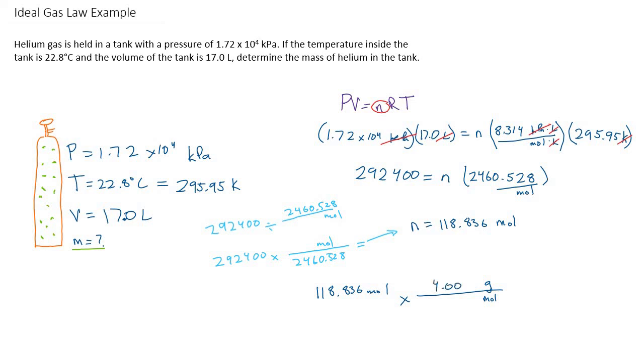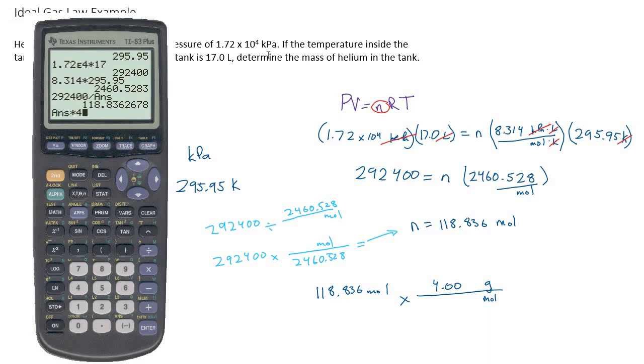Helium gas is 4.00 grams per mole. So we'll multiply our answer by 4 and we get 475.345.